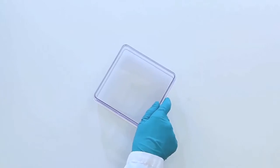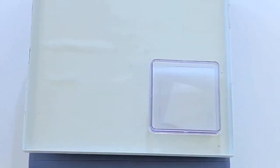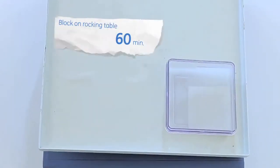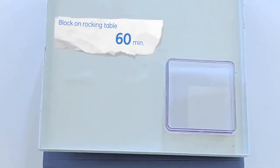Next, block the free sites on the membrane using ECL Prime Blocking Reagent which is compatible with your other reagents. Add the blocking agent and place on a rocking table. Blocking normally takes one hour at room temperature.